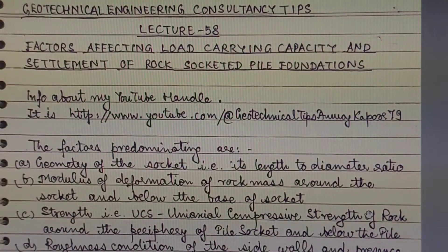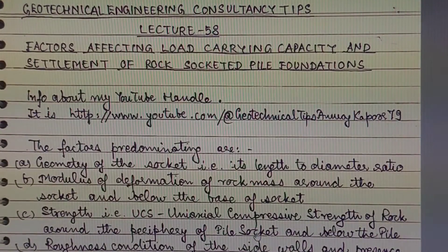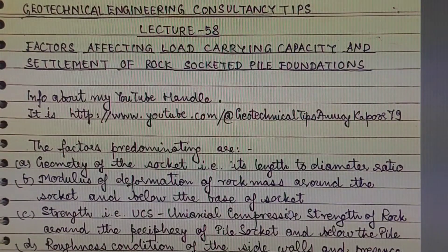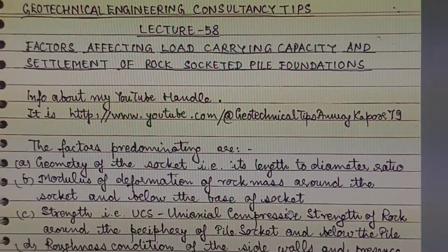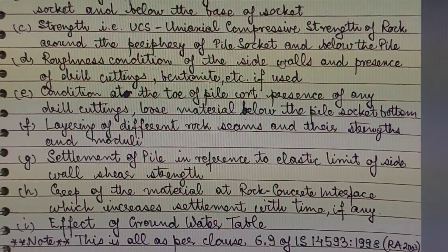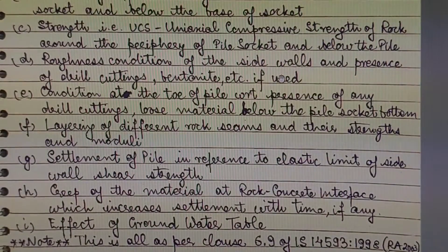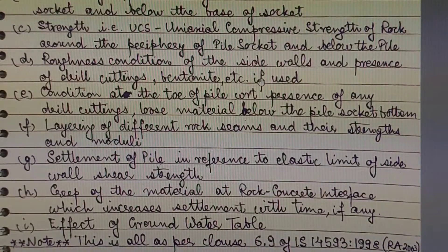Factor D is the roughness condition of the sidewalls and the presence of drill cuttings, bentonite, etc., if any — because the interface between pile concrete and rock, including any adhesion and cohesion, can affect the load carrying capacity of the particular pile.